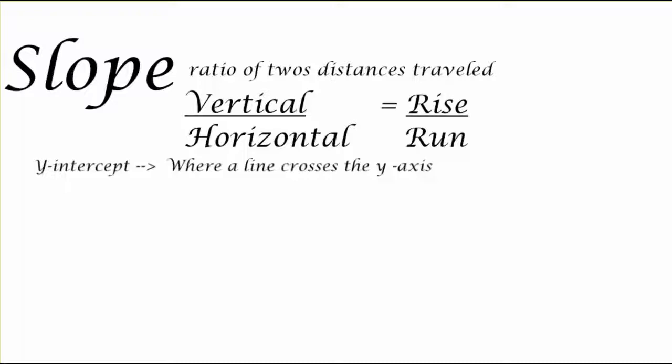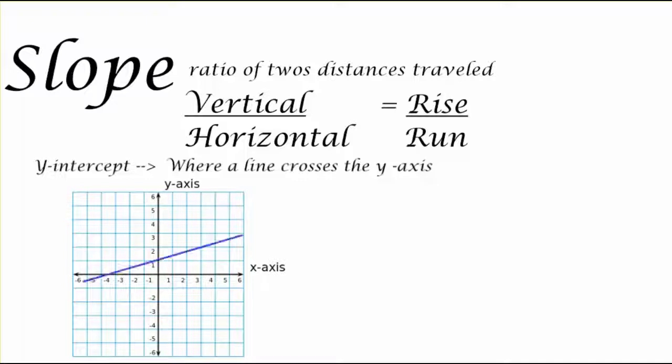Now we also think about the y-intercept of a line, and that's where a line crosses the y-axis. So let's look at a simple line and think about both of these things, slope and y-intercept. Now my line from one set point that I know goes up one spot and then goes over three spots to another solid point that I know.